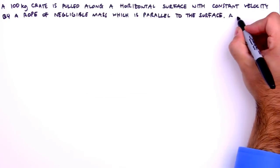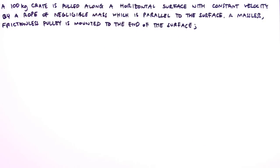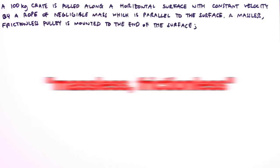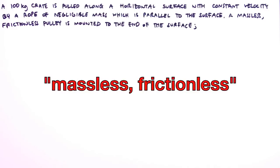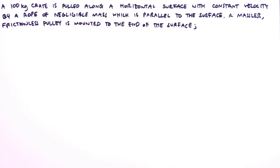Negligible mass means we can ignore the rope's inertial contribution to the system's motion, thereby simplifying the problem. Next, a massless, frictionless pulley is mounted to the end of the surface. Again, this massless, frictionless pulley doesn't exist in the real world, but in physics land, situations can be idealized so that we're able to focus our attention on the underlying fundamentals.